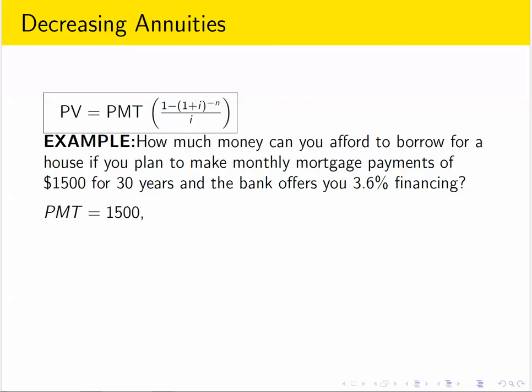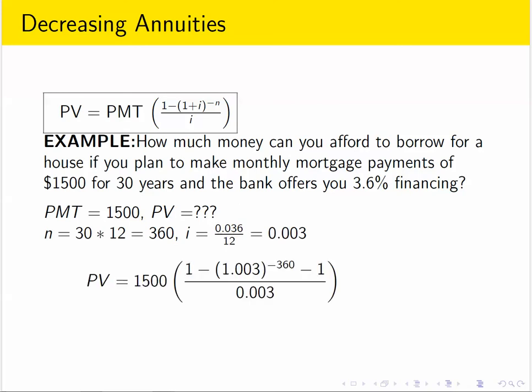So $1,500 a month for each payment — we want to know how much we can borrow right now, which is the present value. There'll be 30 years of monthly payments for 360 total payments, and the periodic interest rate is the annual interest rate divided by 12. Plug everything into the formula and simplify, and you get $329,927.49.